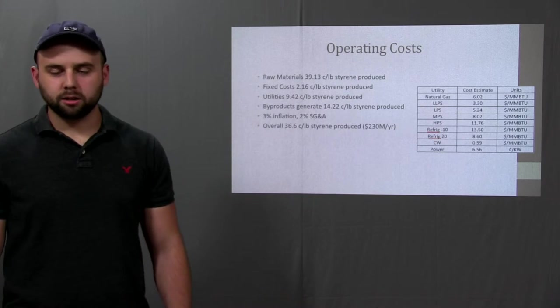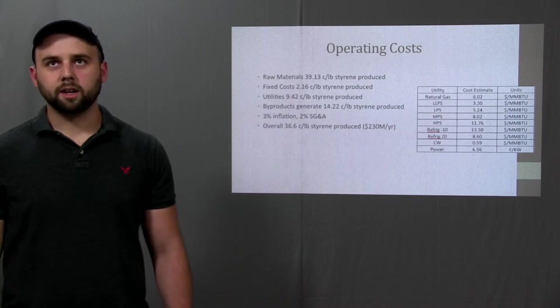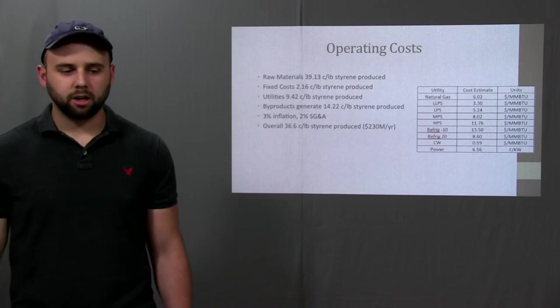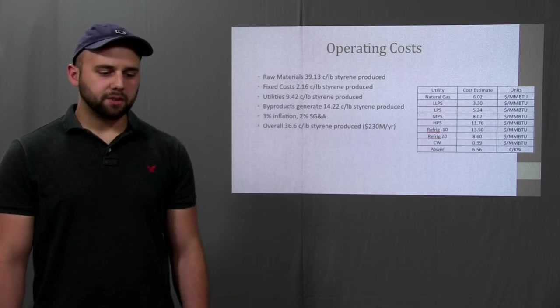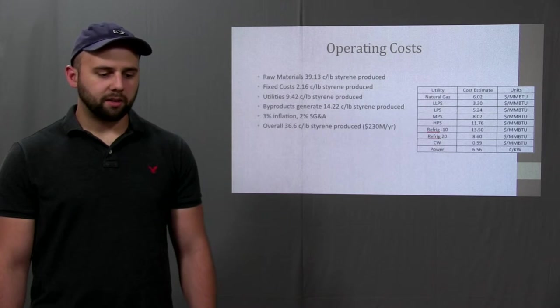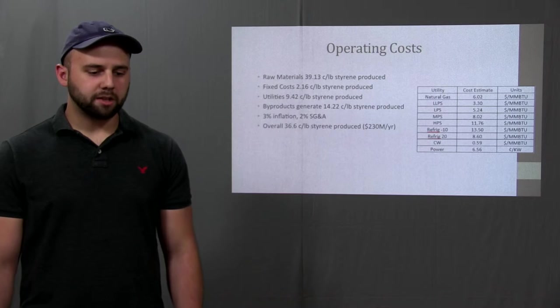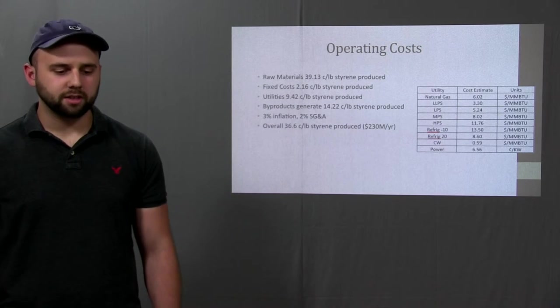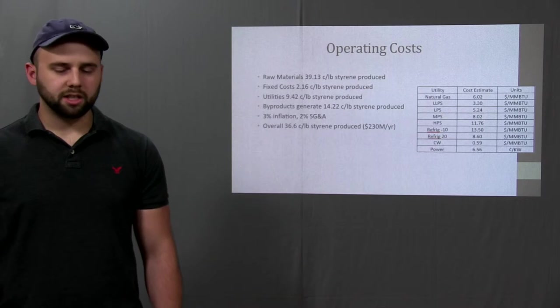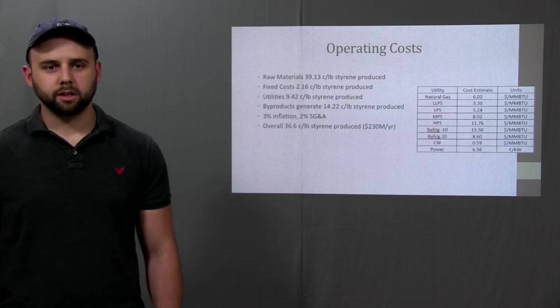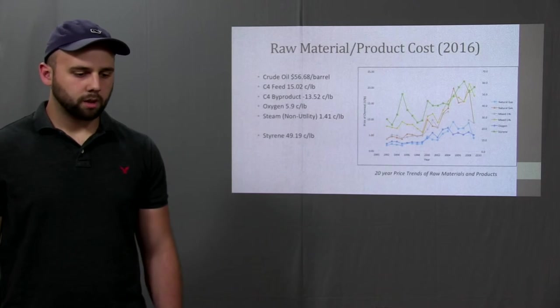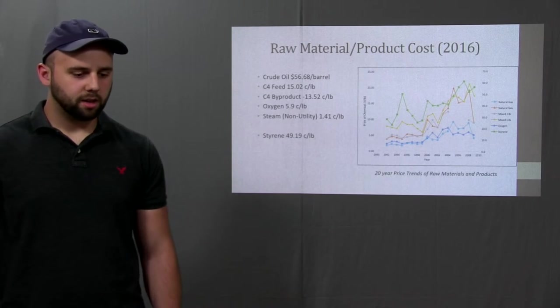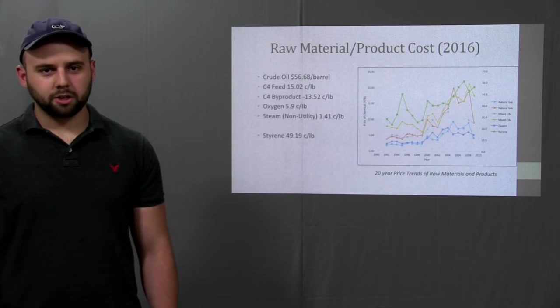The byproducts which generated income included the C4 raffinate that is separated from butadiene and the butadiene recycle stream. Inflation or escalation accounts for a three percent increase in cost each year. SG&A stands for selling generation and administration. Selling includes advertising, rent, sales tax, and other selling costs. Administration includes executive salaries and general support costs. And generation includes any other costs that don't fit into any of the previous categories. This puts a two percent addition to yearly operating costs. Total operating costs for the facility are $230 million per year. The chart pictured plots a 20-year trend of all the raw materials and product involved in this process. As you can see the price of styrene is steadily rising and should be profitable in the near future.